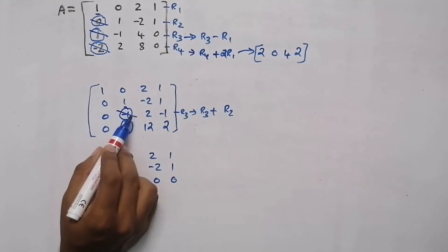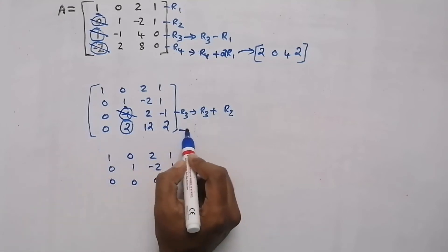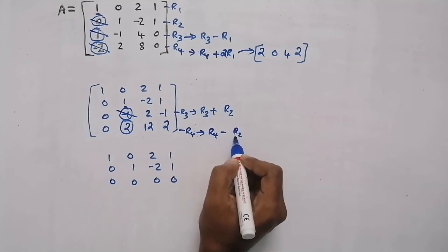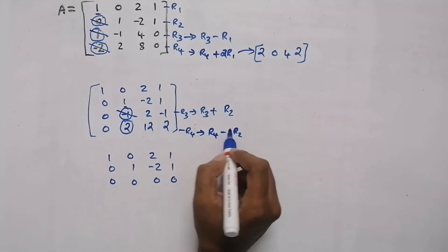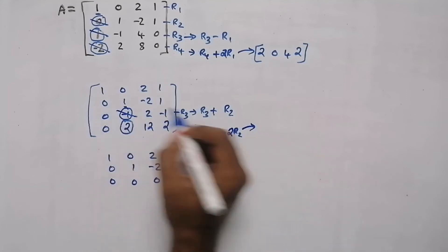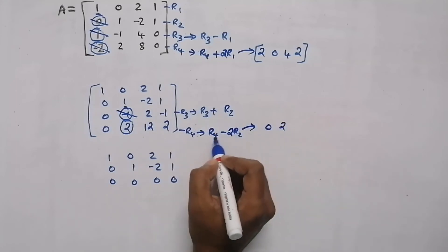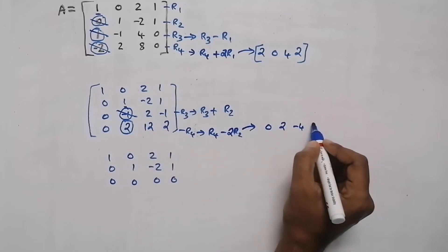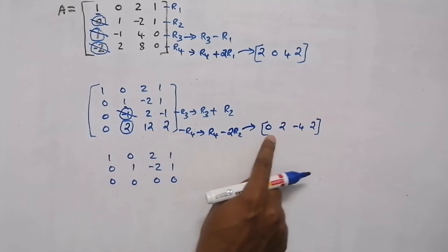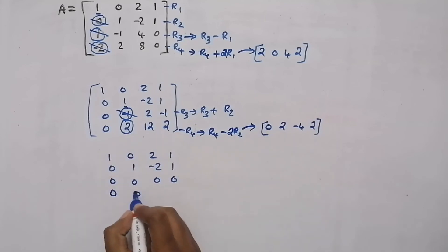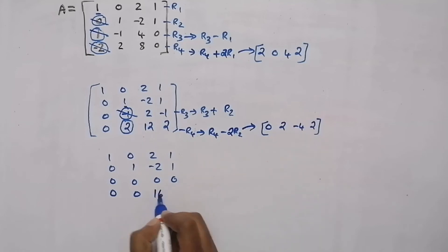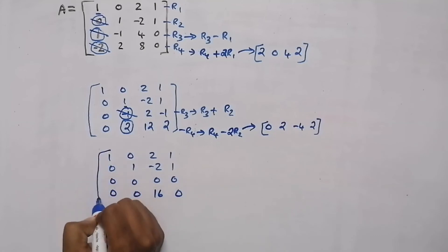Now we need to make this element in the fourth row 0. The operation is R4 plus 2R2. To avoid confusion write 2R2: 2 into 0 = 0, 2 into 1 = 2, 2 into minus 2 = minus 4, 2 into 1 = 2. Now R4 minus this value: 0 minus 0 = 0; 2 minus 2 = 0; 12 minus minus 4 — two minuses make a plus — so 12 plus 4 = 16; then 2 minus 2 = 0. So this is our new matrix.